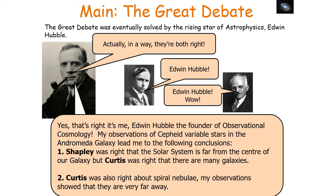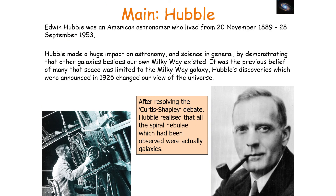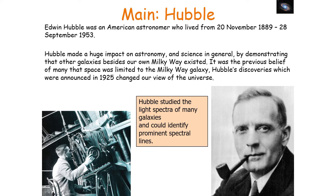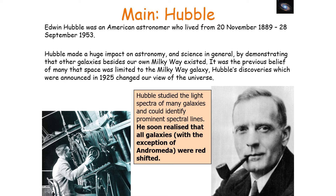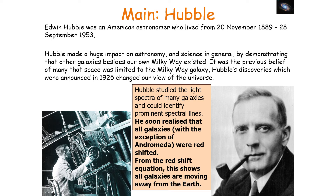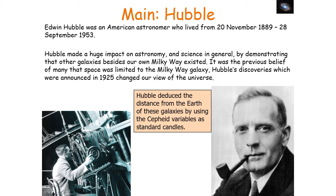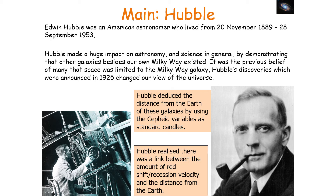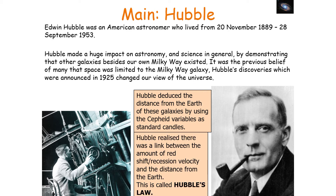Curtis was also right about the spiral nebulae — observations showed they were very, very far away. After resolving this debate, Hubble realised all the spiral nebulae were actually galaxies. He then studied the light spectra of many galaxies, identifying prominent spectral lines, and soon realised that all galaxies — with the exception of the Andromeda galaxy — were redshifting away from us. From the redshift equation, this shows all galaxies are moving away from Earth with a recession velocity, and Hubble deduced a link between redshift, recession velocity, and distance, which he called Hubble's Law.